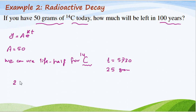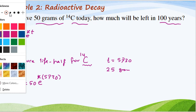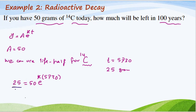25 = 50e^(k × 5730). Divide both sides by 50. We can get 1/2 = e^(k × 5730).